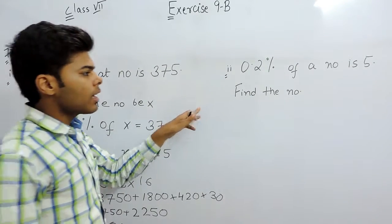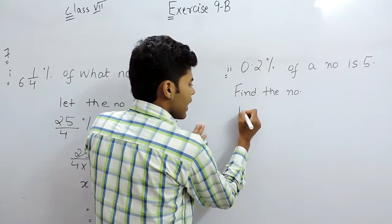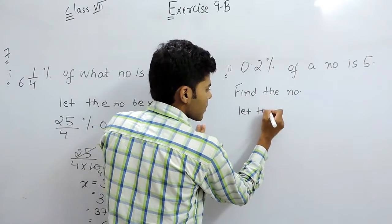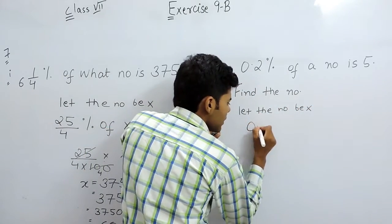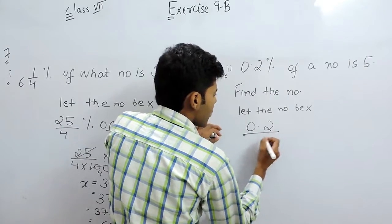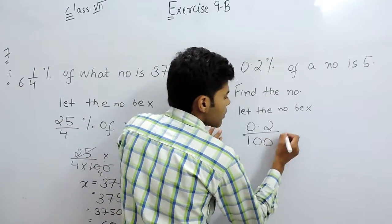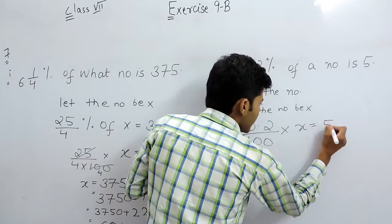In the second part we will again assume the number to be x. The question says 0.2 percent, means 0.2/100, multiplied with x will be equal to 5.